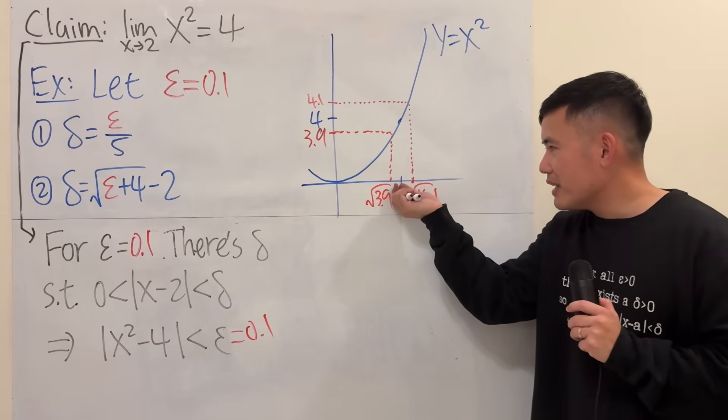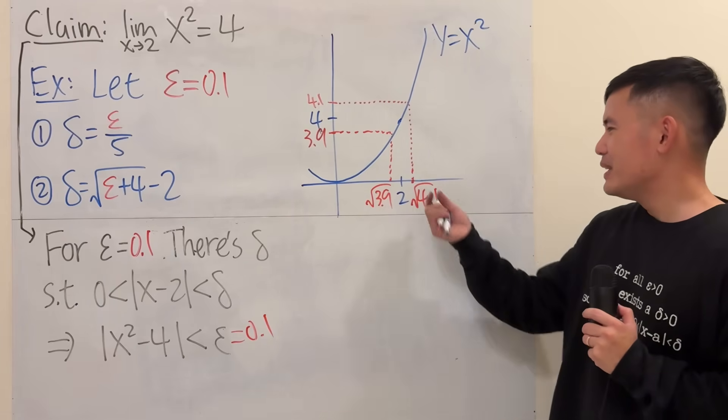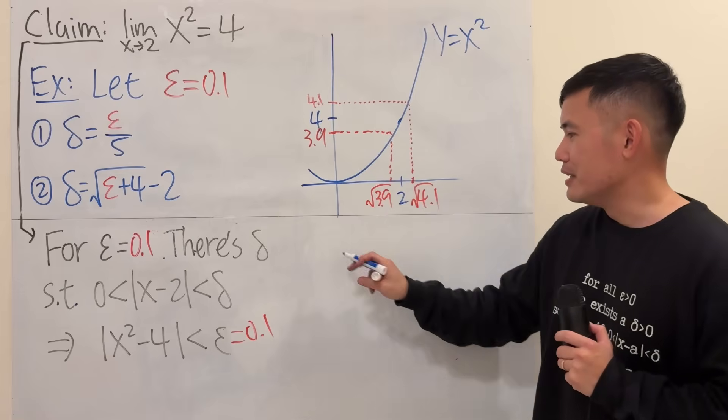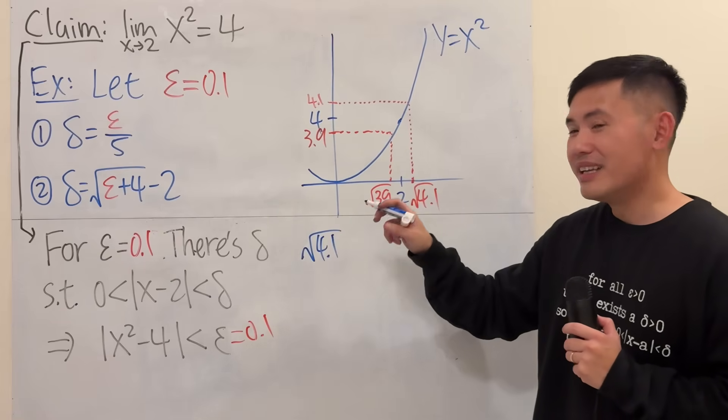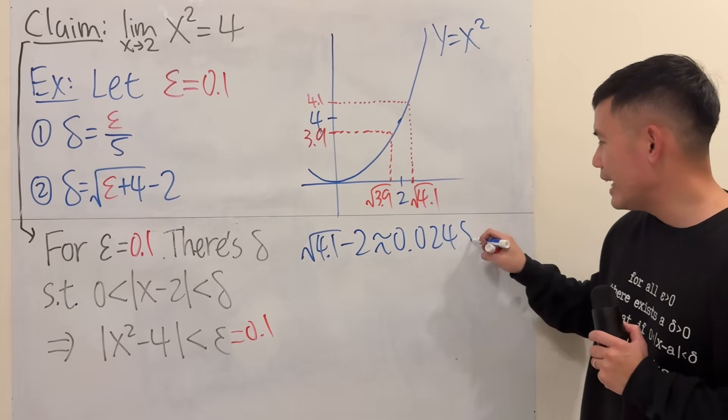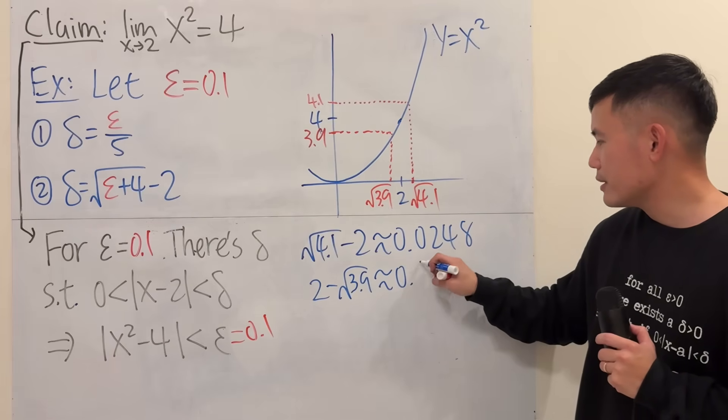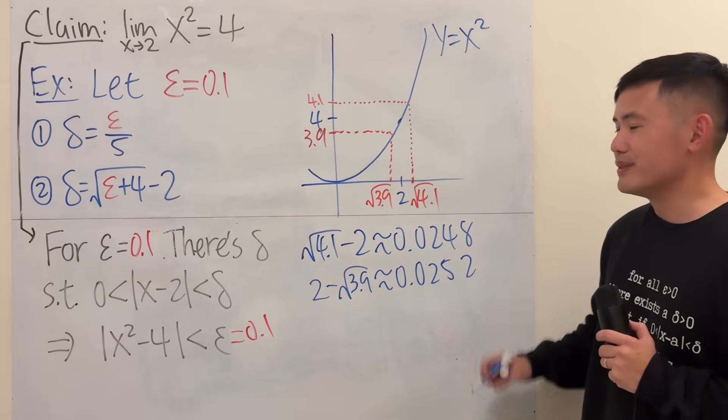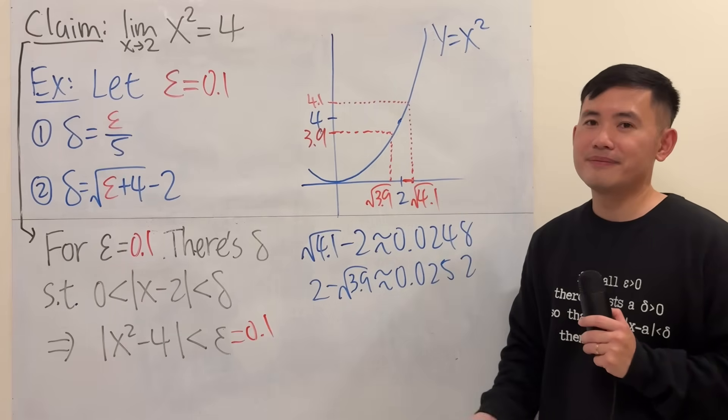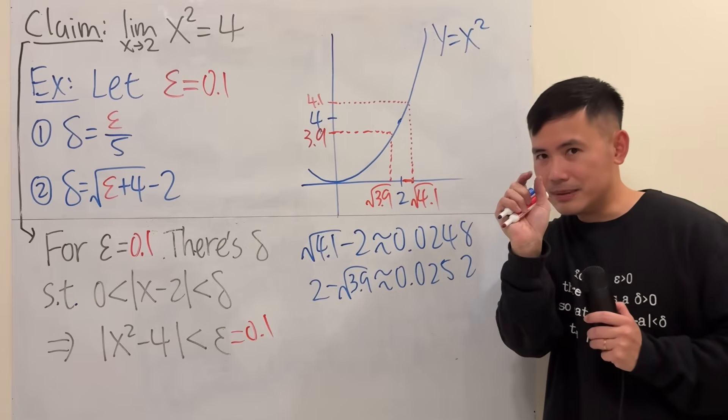Now, let me ask you, are they the same distance? No, in fact, not, right? They look really close, but no. And the fast way for me to show you that they are not the same thing is to just show you the decimal computation. If you take √4.1 - 2, you get approximately 0.0248. If you do 2 - √3.9, you get approximately 0.0252. In fact, this right here is a little bit shorter than that. And you can also argue that because this goes up faster compared to that, that's why this is smaller length.